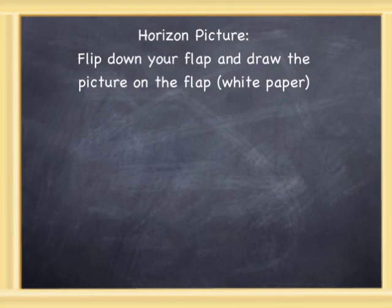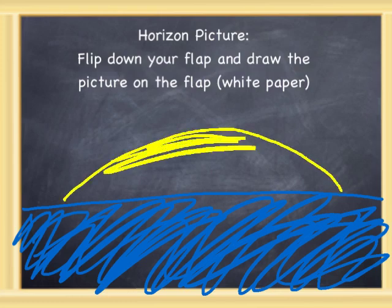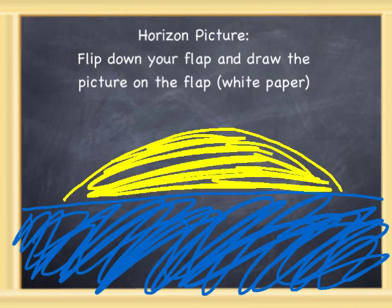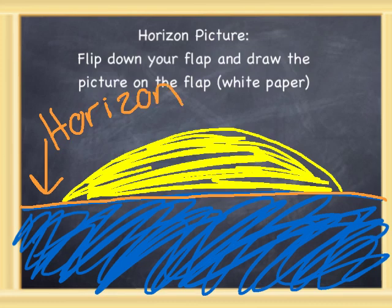You're going to draw a picture on the flap, so you'll have your notes and then your picture. Your horizon is going to look something like this — I'm going to draw the ocean, then I'm going to draw the sun. It's like the sun is setting or rising, and it looks like there's a line where the sun and the ocean meet — that's your horizon. Sometimes when we look out far away, whether it be a beach or a grass field, you can look out at the horizon and it looks like there's a line there, but there isn't.